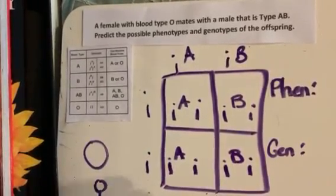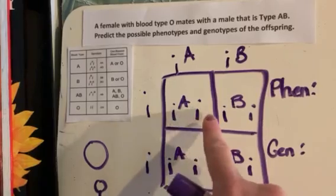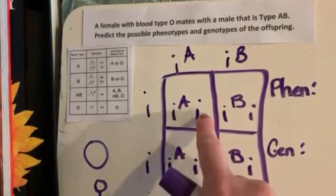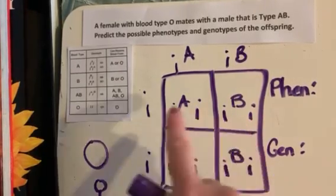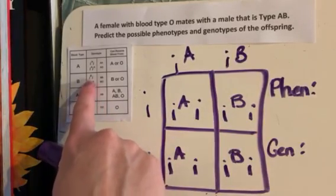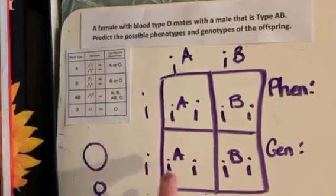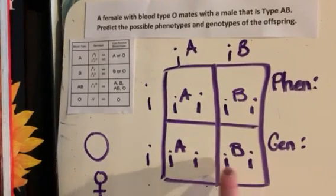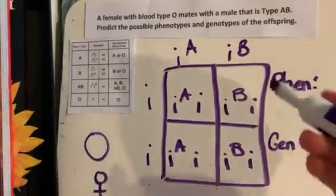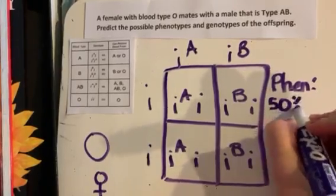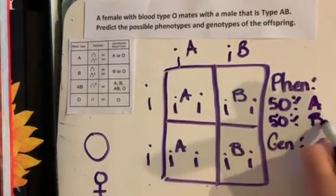Let's interpret our results. This offspring has the A dominant allele — even though they're carrying the recessive, they're heterozygous — so this offspring is going to have blood type A. This offspring is going to have blood type B. If you're ever in doubt, just look at the chart: if you have genotype I-B-i, you're going to have blood type B. So two out of four, 50%, will have blood type A and two out of four, 50%, will have blood type B.